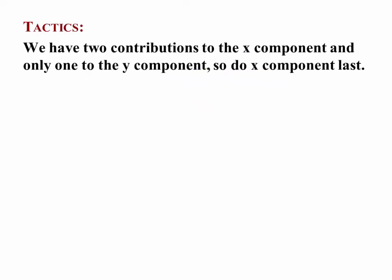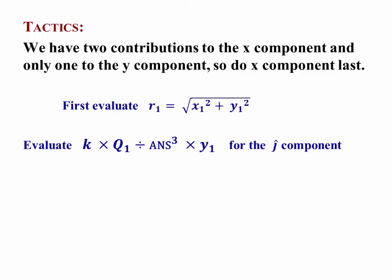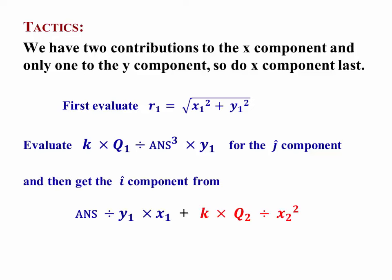So tactically, since I've got two contributions of the x component and only one for the y, I want to do the x component last. I want to do the simple one first for q1, and then go and do the rest. So I'm going to calculate the magnitude of r for q1 from x1 squared plus y1 squared square rooted. Then evaluate kq1 divided by answer cubed times y1, so that I've got the y component from q1. Then divide that answer by y1 multiplied by x1. That gives me the x component from q1.